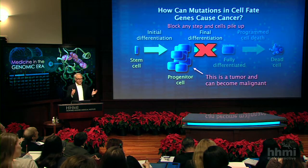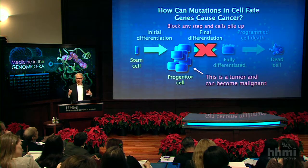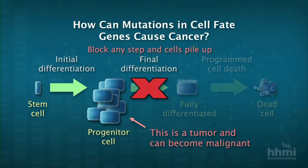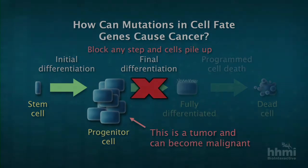But how does a mutation in a gene that regulates that process cause cancer? It doesn't change the proliferation rate of the cell — it just blocks the ability of the cell to undergo one of those steps in differentiation. So if there's a block, there's a pileup of cells that are trying to get through that block, and that pileup of cells can form a tumor.